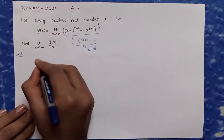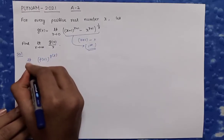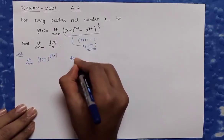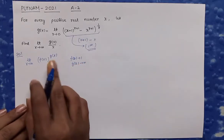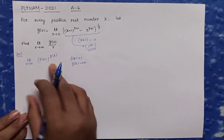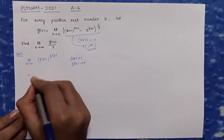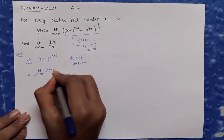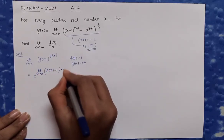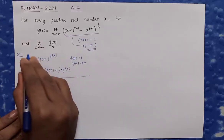We know that if we have limit of [f(x)]^g(x) as x tends to a, where f(a) tends to 1 and g(a) tends to infinity — that is, the 1^∞ form — then we can write it as e raised to the power of limit as x tends to a of [f(x) - 1] × g(x). I hope you know this formula. Using this formula, I am going to proceed.